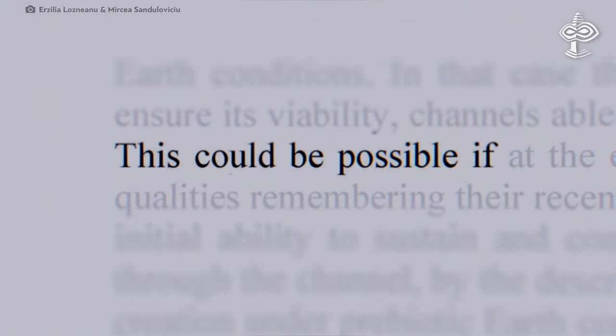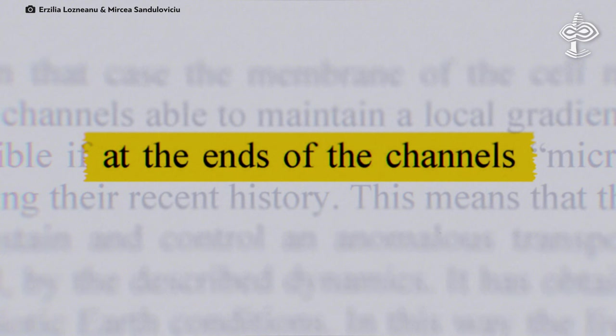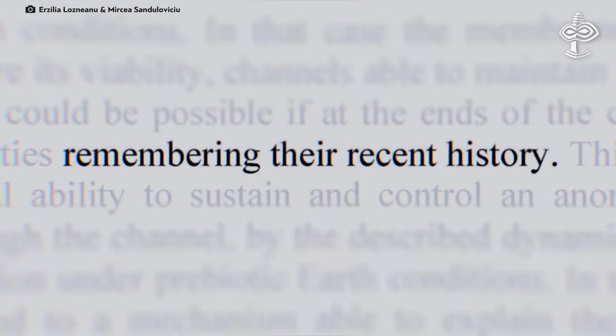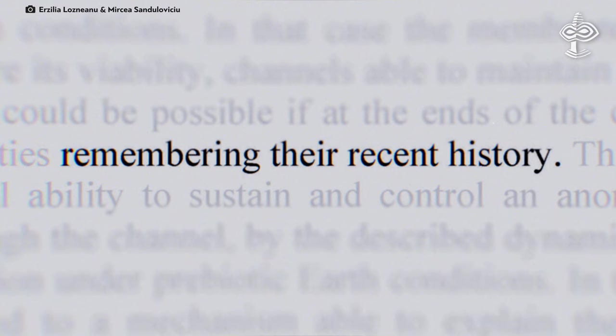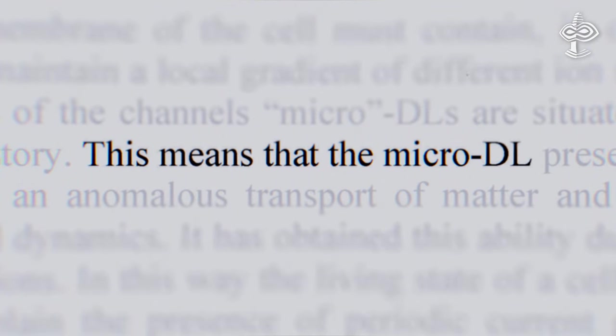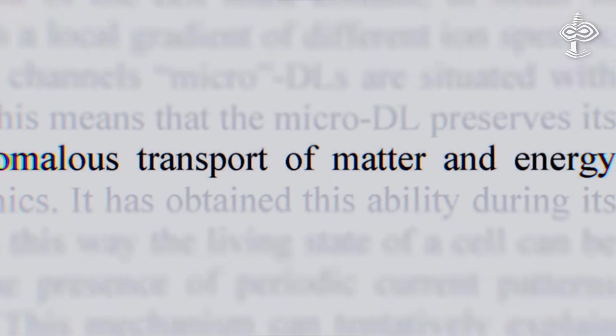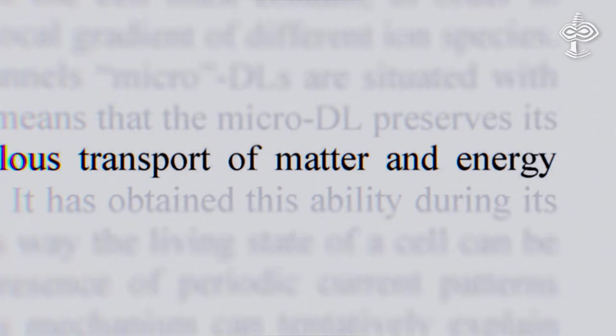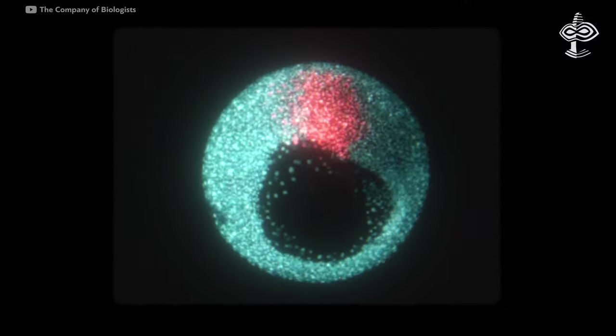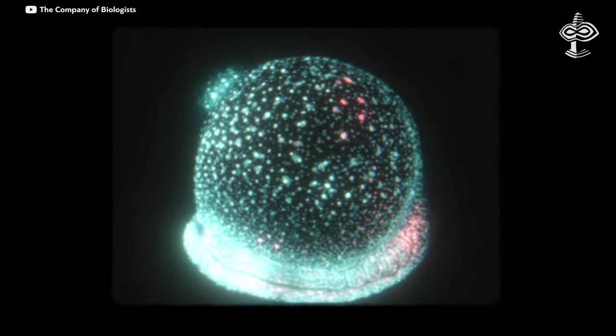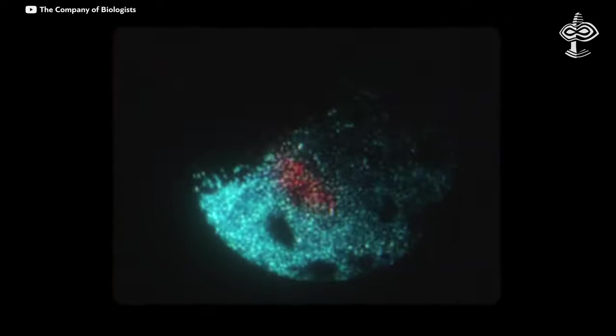This could be possible if at the ends of the channels, microball lightning are situated with qualities remembering their recent history. This means that the microball lightning preserves its initial ability to sustain and control an anomalous transport of matter and energy through the channel by the described dynamics.